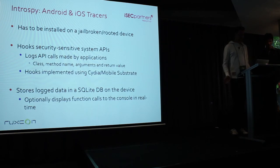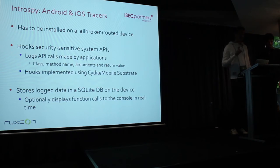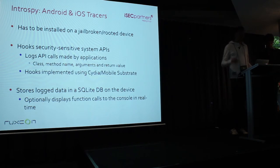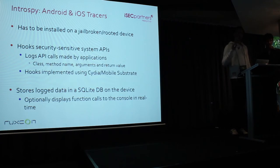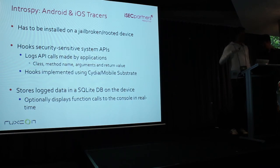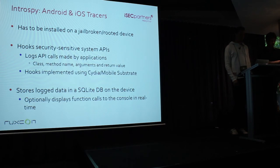A bit more detail about the tracers: you need a jailbroken device because the tracer does something very powerful — it hooks the system API. On iOS, that's the iOS Touch API; on Android, that's the Android system API. It doesn't hook all functions, only the ones we think are interesting — the security-sensitive APIs. It hooks those functions just to log whenever they're called, including the arguments and the return value. We coded this using CDA Substrate on Android and Mobile Substrate on iOS, which are frameworks that make it really easy to hook functions. All logs are stored in a SQLite database on the device, one database per application.